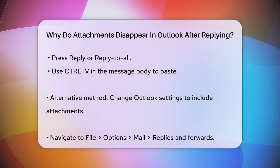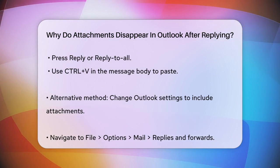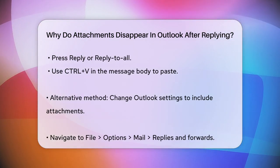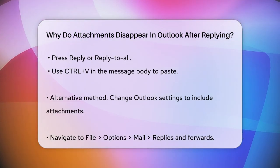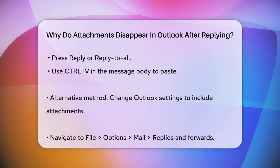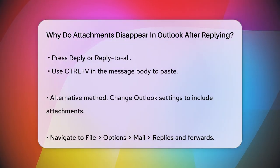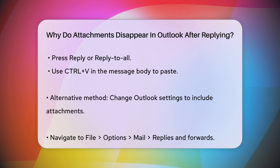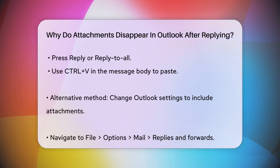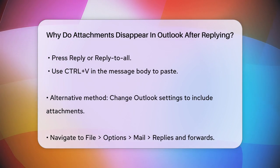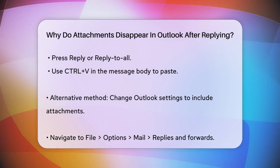Another method involves changing your Outlook settings. You can go to File, Options, Mail, Replies and Forwards, and select the option to attach original message when you reply. This way, the entire original email, including its attachments, will be attached to your reply.